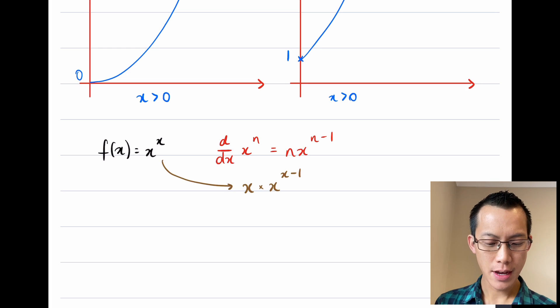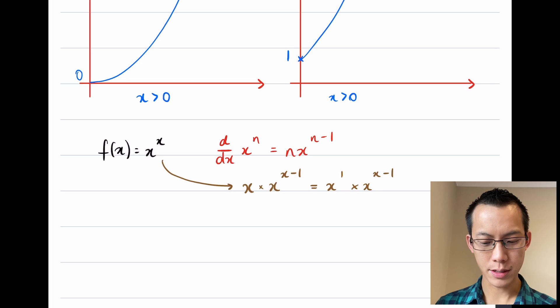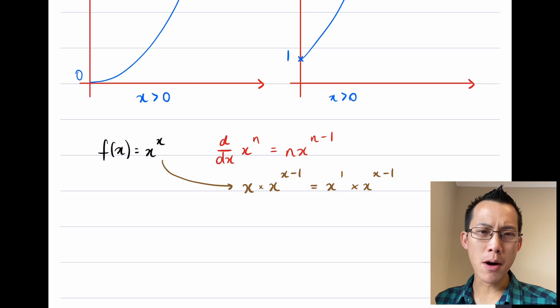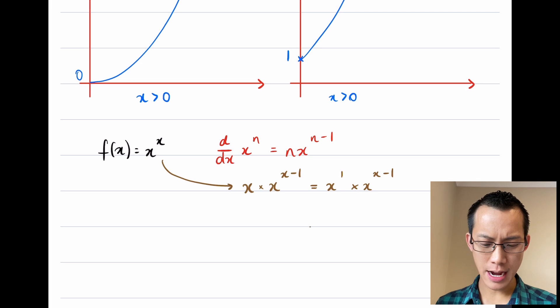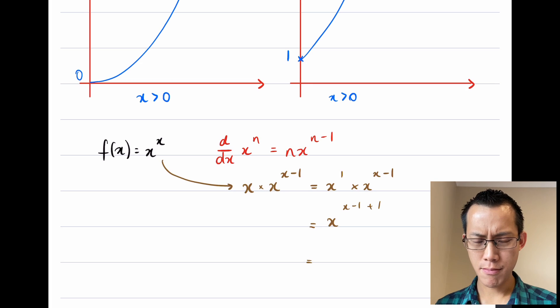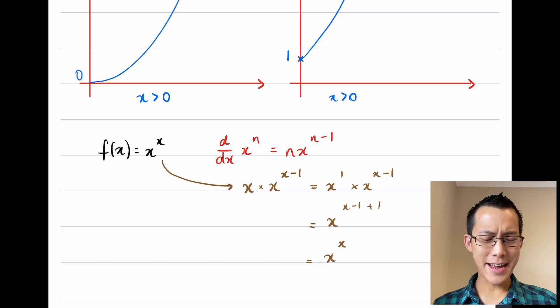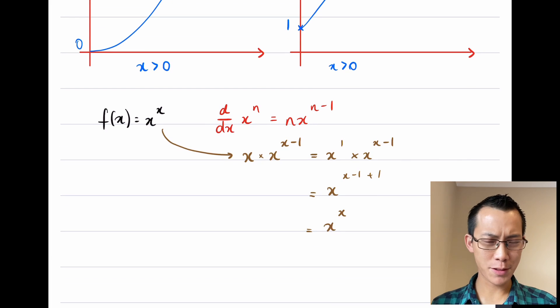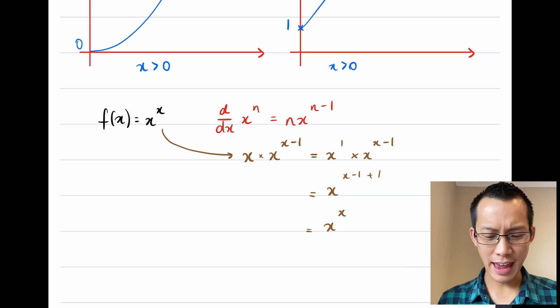Now interestingly, if I think this is the derivative, I can work with this a little more. I can actually say, well I have index laws. This is x^1 times x^(x-1). When I multiply two numbers that have the same base, I add their indices, so I'm thinking that this will give me x^(x-1+1). Minus 1 plus 1—that's x^x. Now this is problematic. This is, once we simplify, apparently the function that we came from.